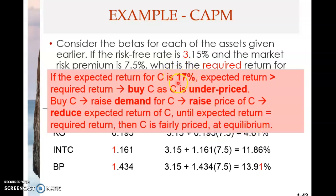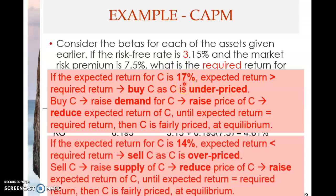This continues until the expected return is equal to the required return. When that happens, stock C is fairly priced. So if the expected return is high, it will go down due to price adjustments — the price increases and the expected return goes down. Now if it's the other way around, say the expected return for the stock is 14%, which is lower than the required return, then investors who already own stock C will sell.